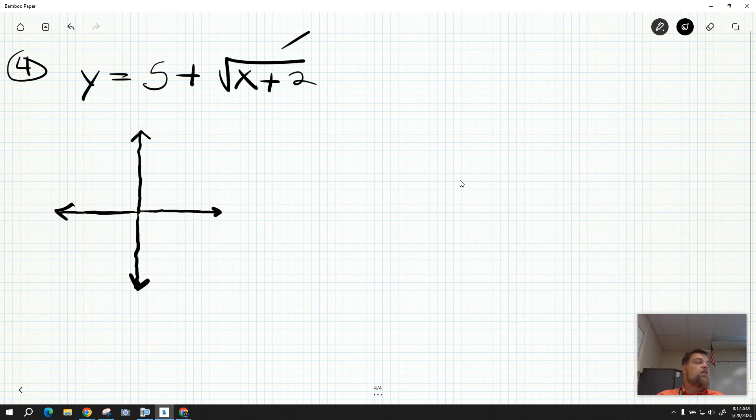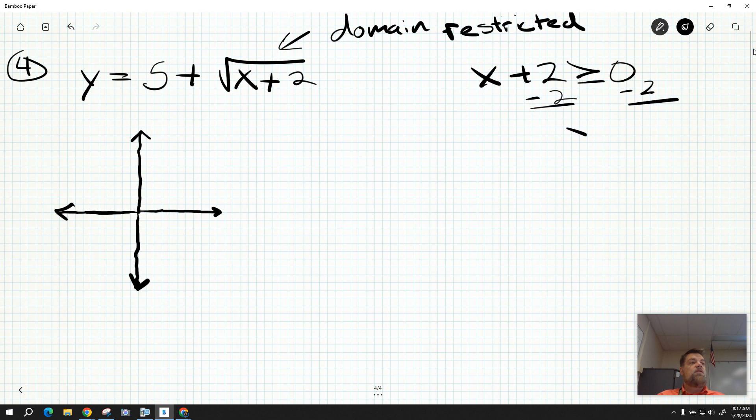So first of all, can't take the square root of a negative number. Because I have a square root, there's probably a domain restriction. That means x plus 2 has to be a non-negative number, greater than or equal to 0. How do I figure out what values I plug into that? Just solve for x. So x has to be greater than or equal to negative 2. Now if you look on the test, I'm pretty sure I already know the answer.